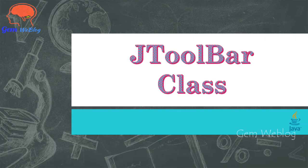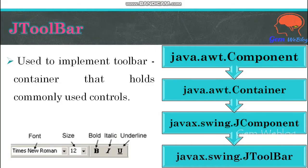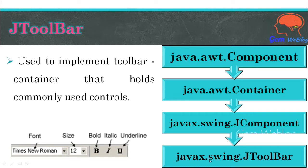Welcome to GemWeblog. In this video we are going to discuss how to create a Toolbar using the JToolbar class. The purpose of JToolbar is to implement a Toolbar, which is a container that holds commonly used controls so that you can retrieve those controls quickly. When talking about the hierarchy, JToolbar belongs to the javax.swing.JToolbar package, which has been derived from the JComponent class.